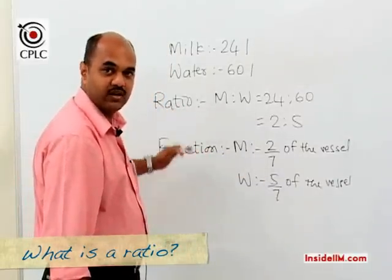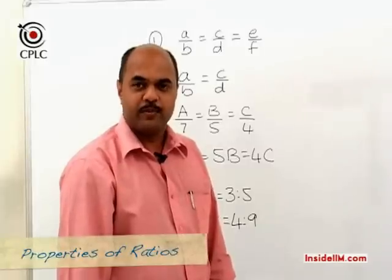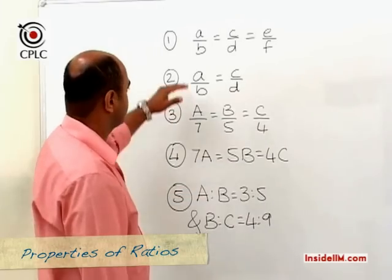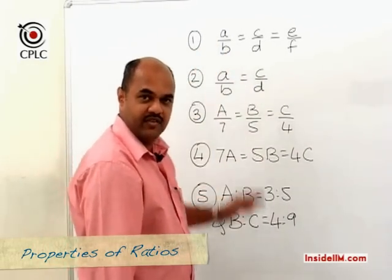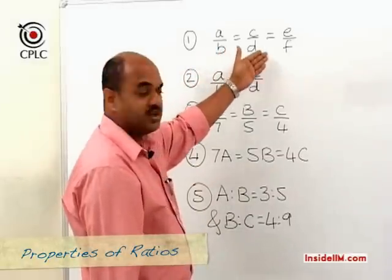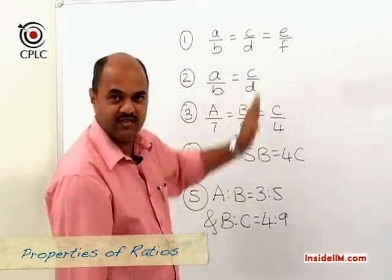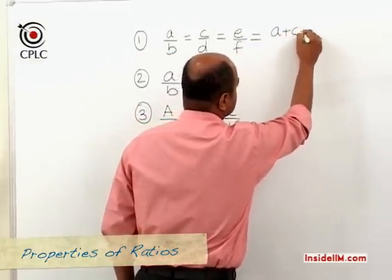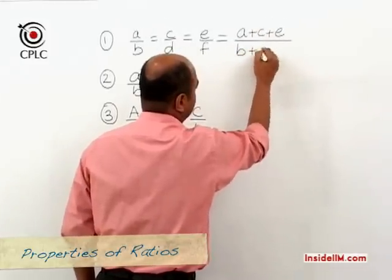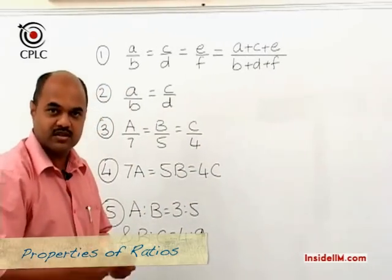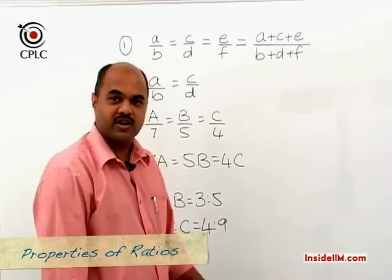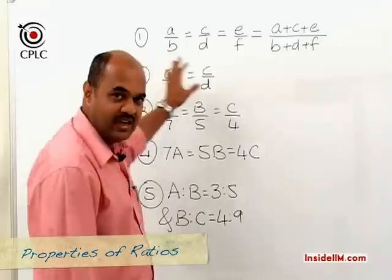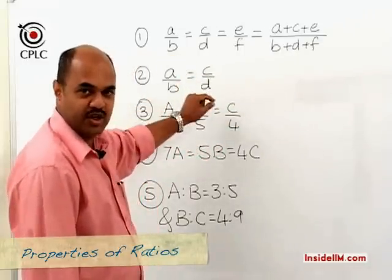Let's look at a few properties of ratios — we're going to go through five properties. The first one: if A/B = C/D = E/F, three ratios are given as equal, then each ratio would be equal to the sum of all the numerators divided by the sum of all the denominators. This is commonly referred to as the property of equal ratios, and this need not be restricted to three ratios.